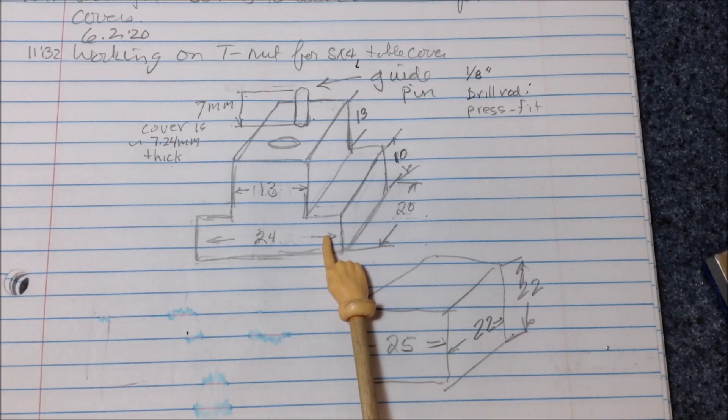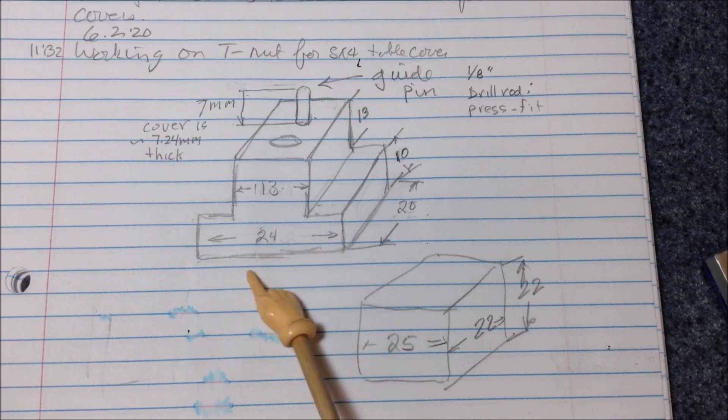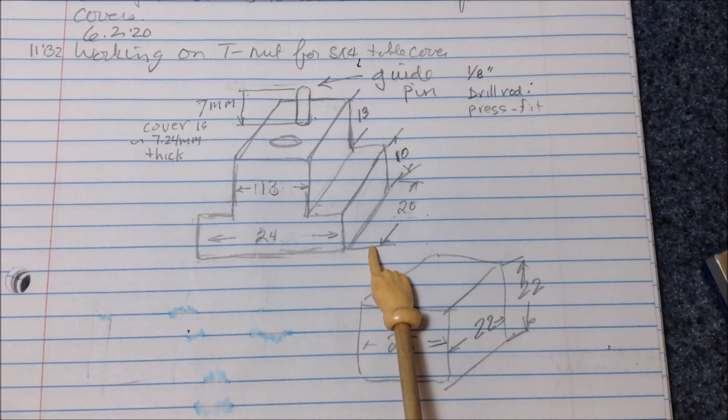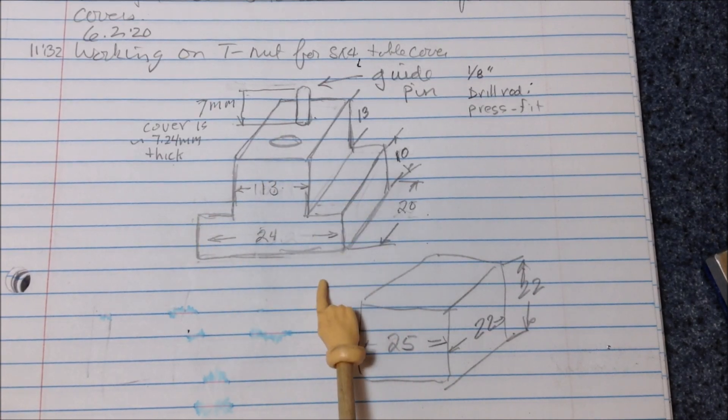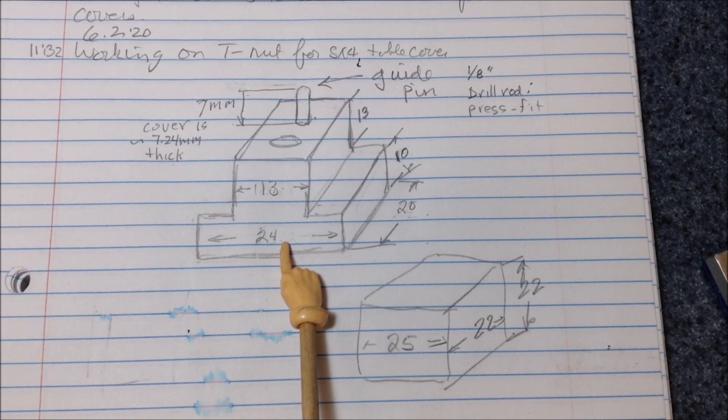So here's the plan for the T-nut. We'll need at least two of these and maybe four maybe even six. I don't know but I'm hoping to get by with just two. But I'm gonna make this out of aluminum and I think I've got some one by one aluminum square bar that I can just cut down and use. So these dimensions are based approximately on some earlier T-nuts I made out of steel.